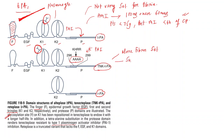Tenecteplase is more fibrin selective. It is given as a single IV bolus — compared to streptokinase and alteplase which are given as infusions over one hour. The risk of intracranial hemorrhage is similar to alteplase, but non-cerebral bleeds are less with tenecteplase. That is why, among streptokinase, alteplase, and tenecteplase, tenecteplase is the best drug for acute myocardial infarction.